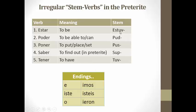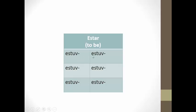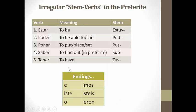Now that we have the irregular stems and the endings, let's put them together. The first verb on your note guide is estar. Step one is to write ESTUV in all the boxes. Then step two, add the endings: E, ISTE, O, IMOS, ISTE, IERON.